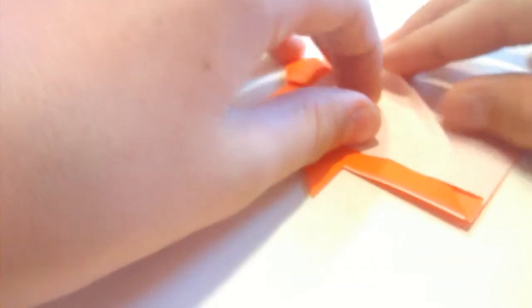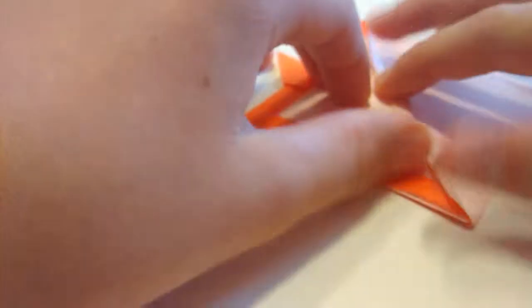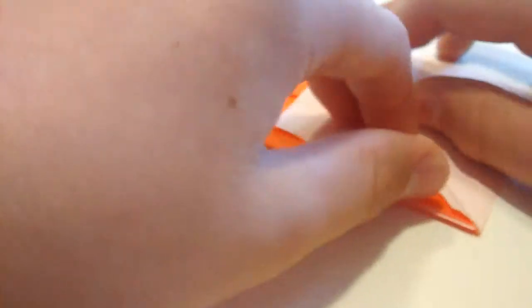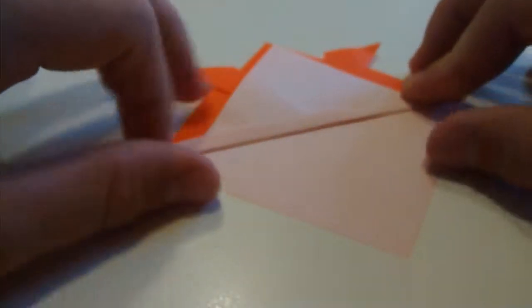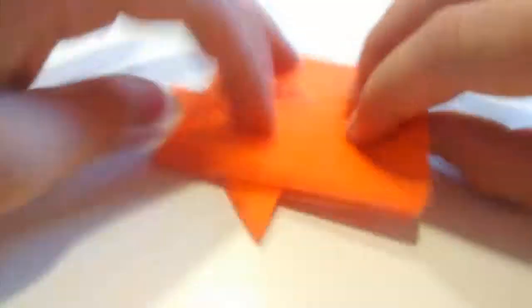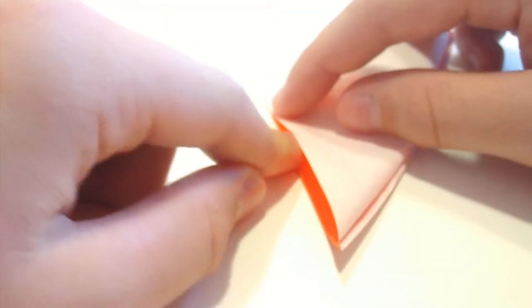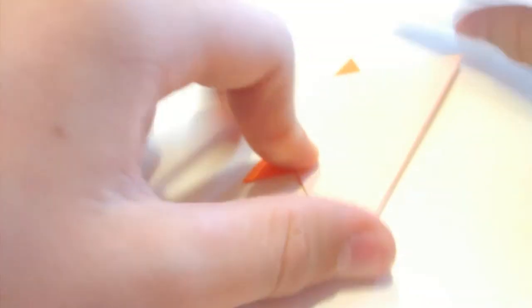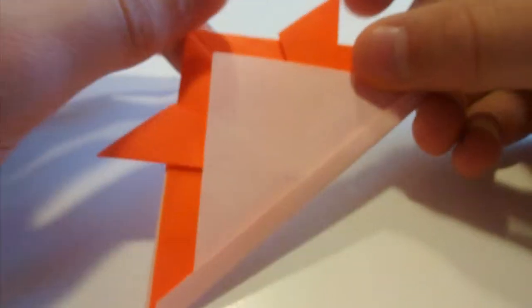And then you can take this bottom bit here, just the first layer, and fold it over on top of this and line it up with the two sides here. And then you want to just turn it over and then fold this bit up, which is actually four and a half. And then you have your samurai helmet.